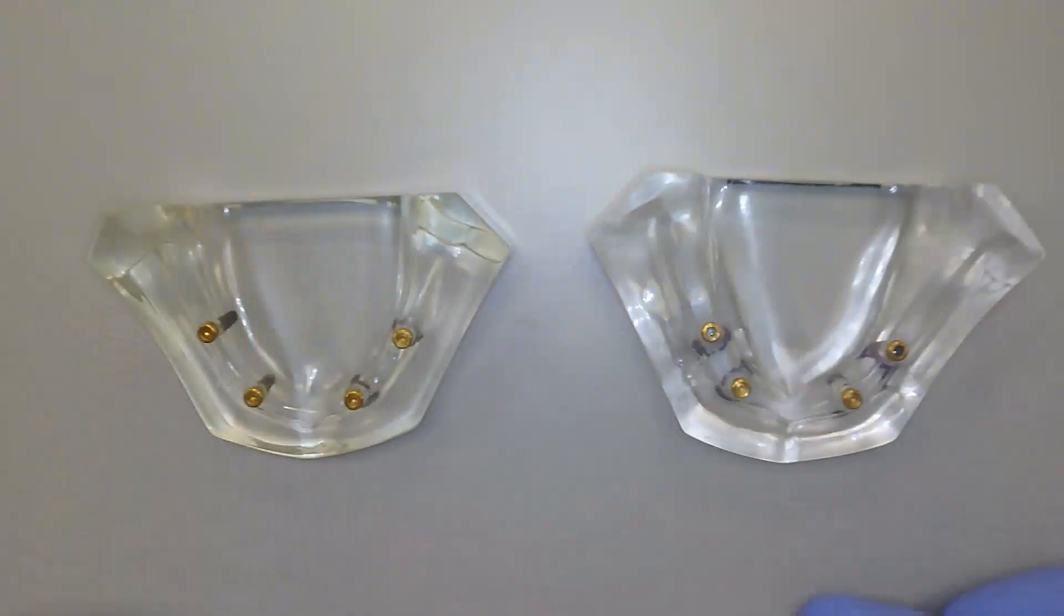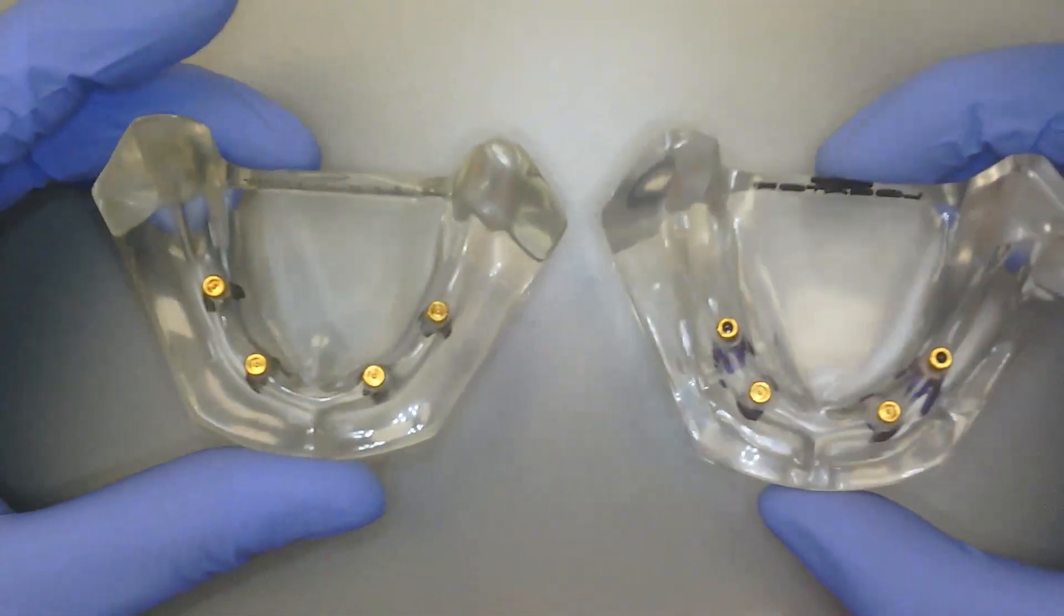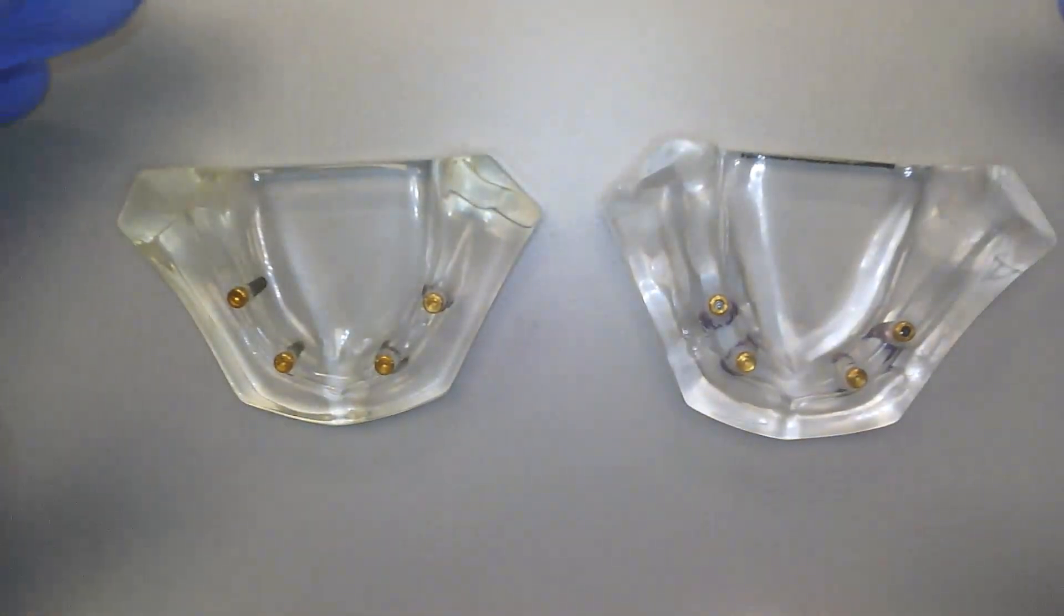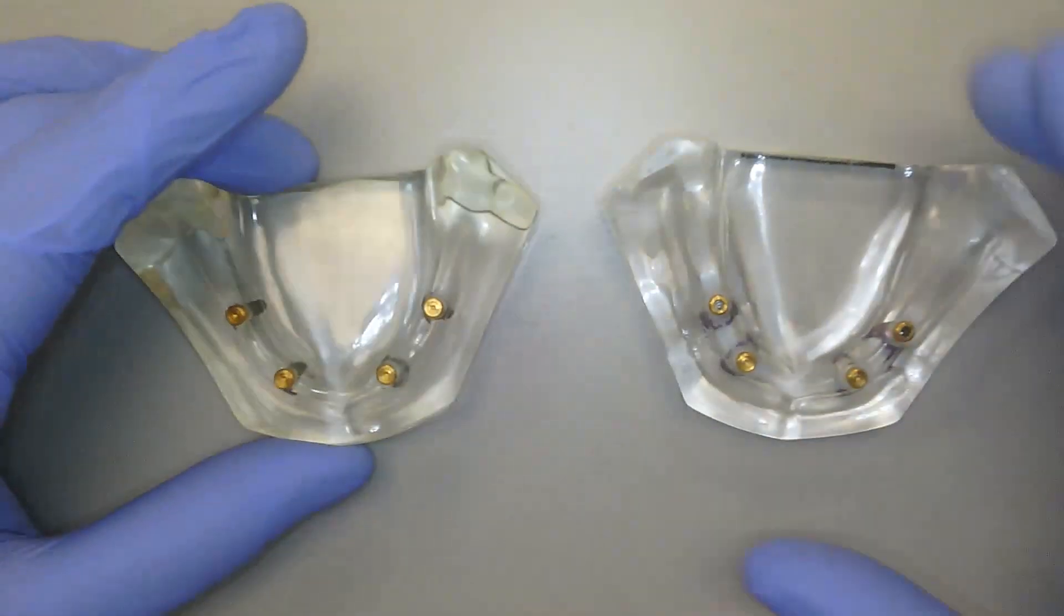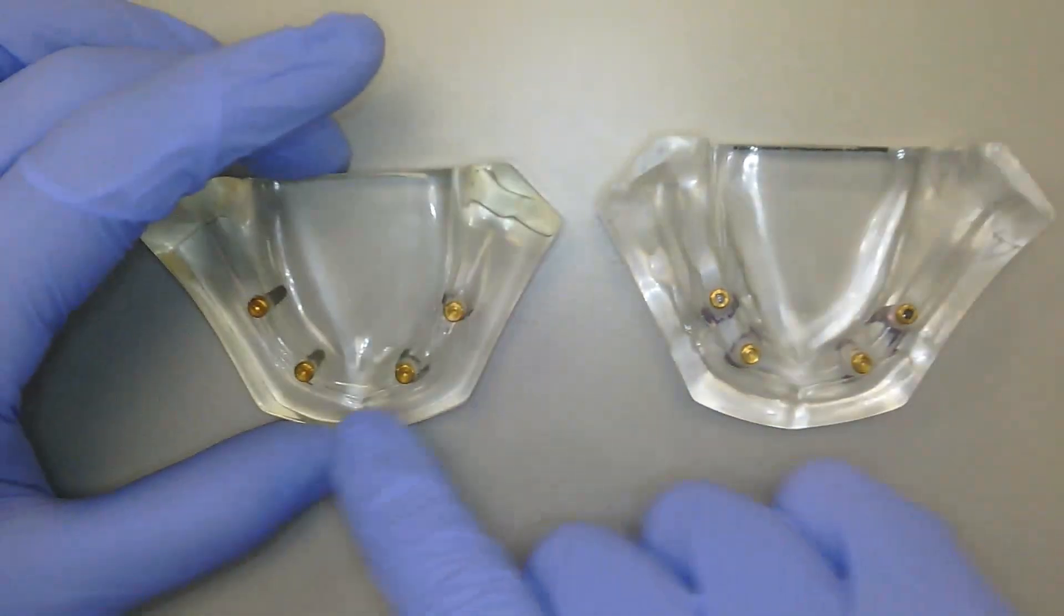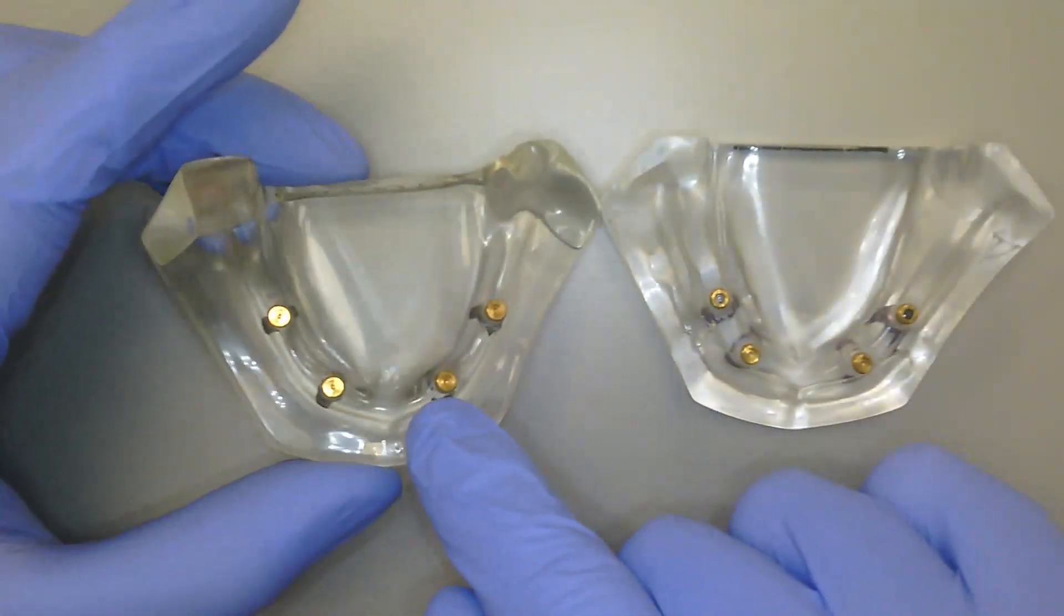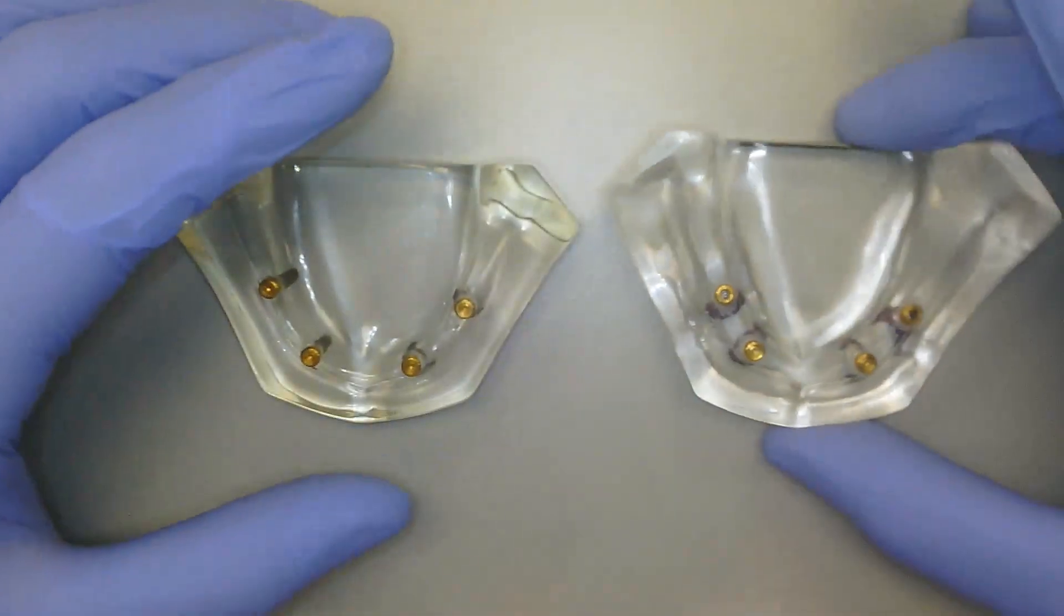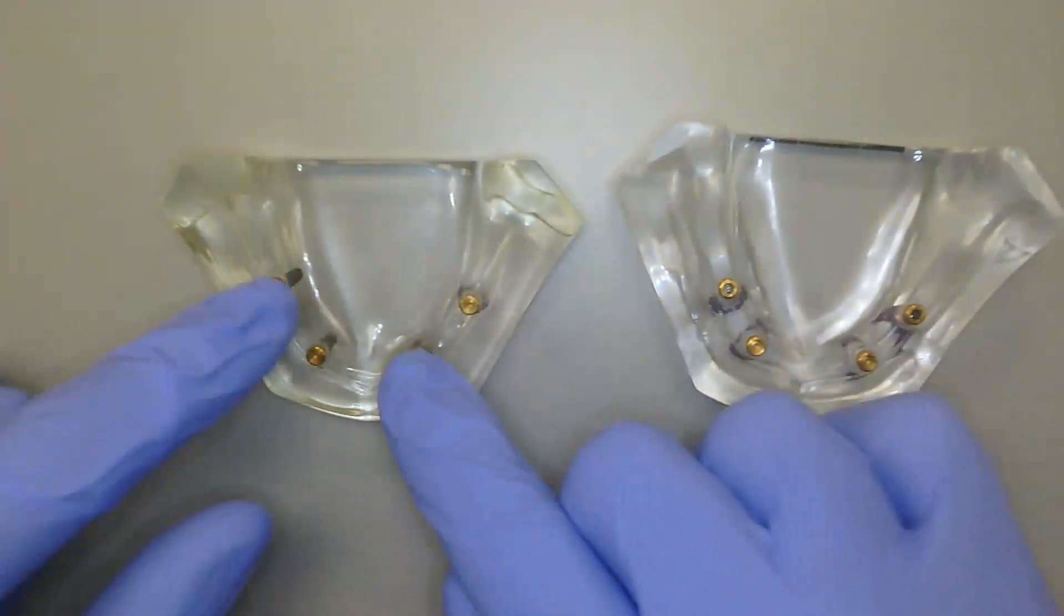Now the first thing that we're going to look at when we take a look at these is they look awfully similar. You can see here across the board, I have that characteristic goldish color of the locator abutment, plus you can see the distinctive triangle of the traditional locator abutment.